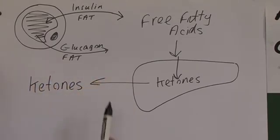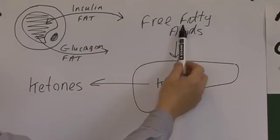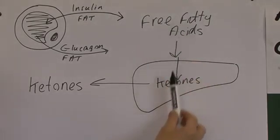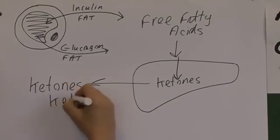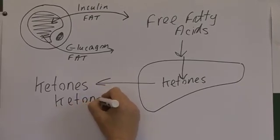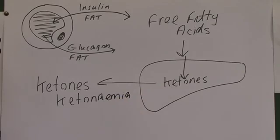And the liver will excrete these ketones into the blood. So as a result of the low levels of insulin, we have more free fatty acids. The liver converts these free fatty acids into ketones, and this means we have more ketones in the blood. We have a ketonemia.